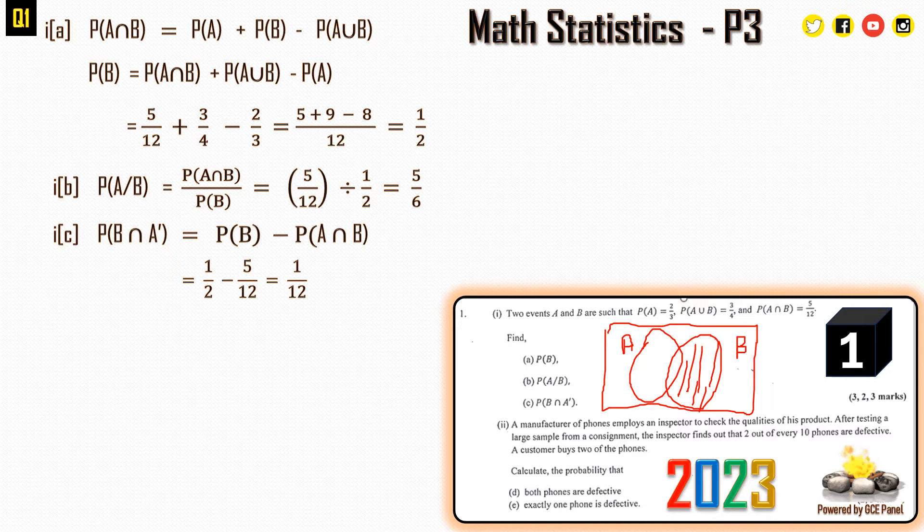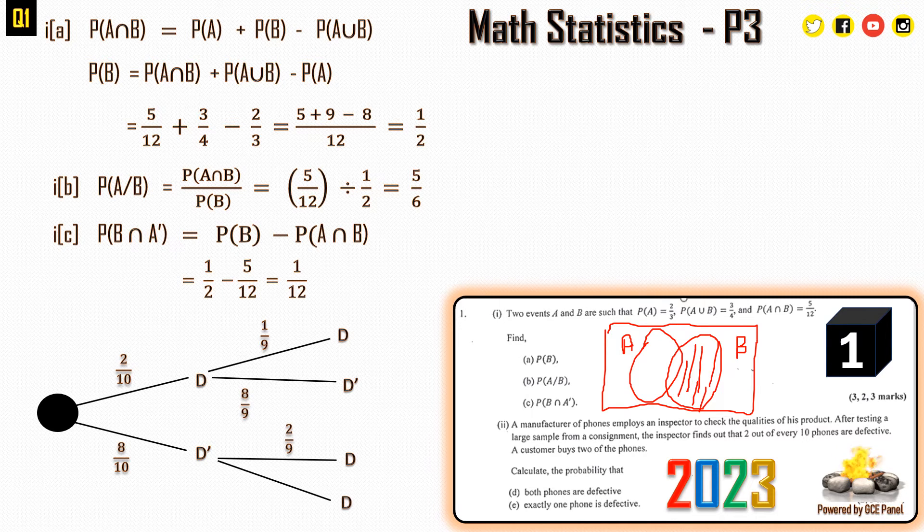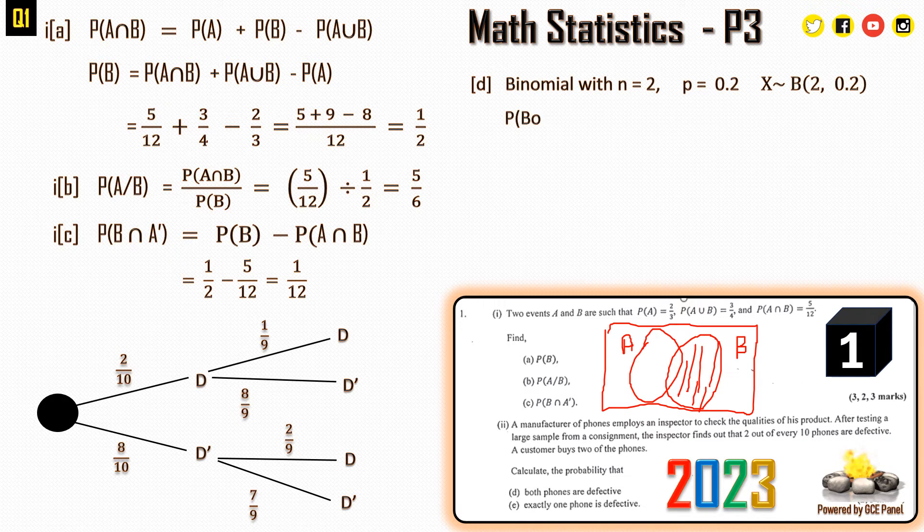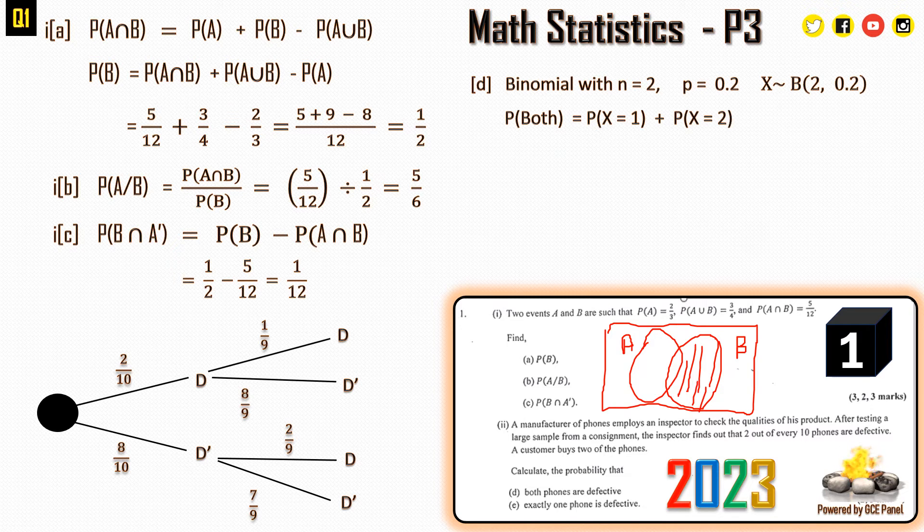From this question, we have been told 2 out of every 10 phones. This brings us the idea of a binomial. Students might want to use a tree diagram, but that's a difficult approach. You have to understand that this is a binomial where the probability of having a defective phone is 2/10 or 0.2, and the number of phones selected is 2. So X follows a binomial with parameters n=2, p=0.2.